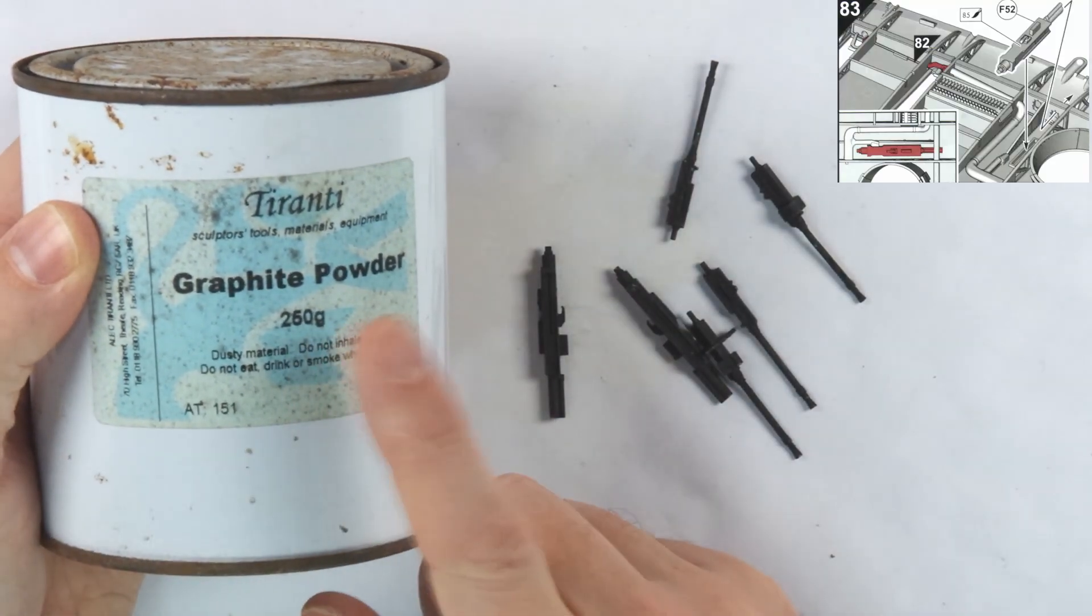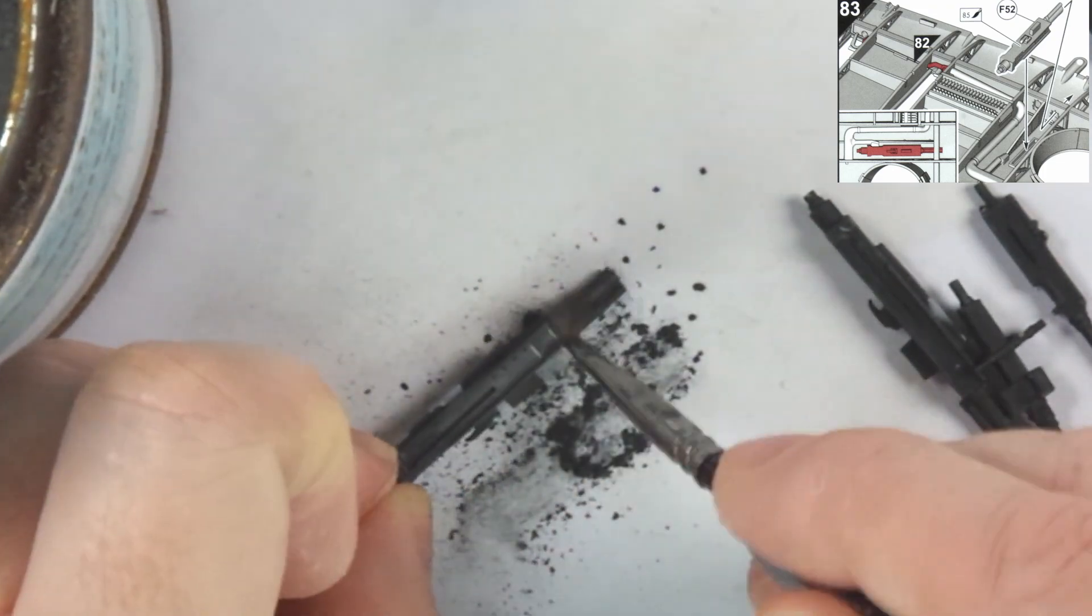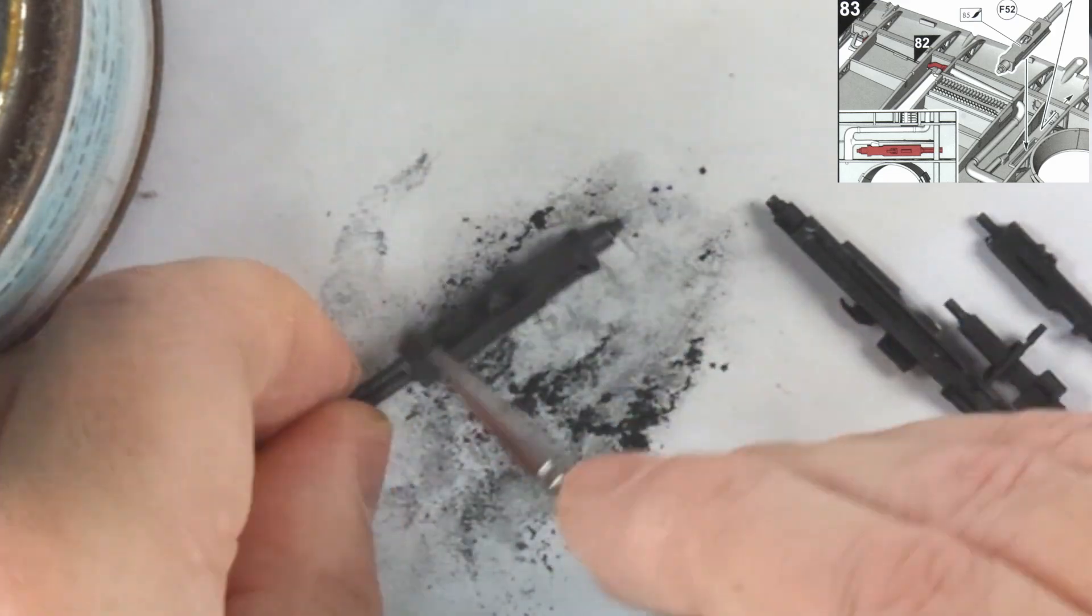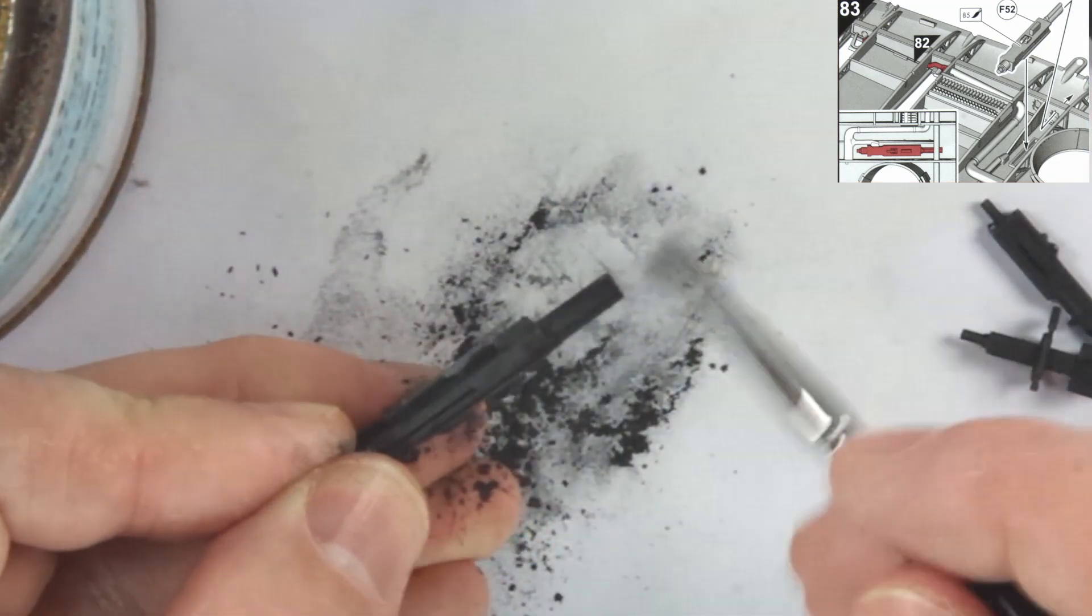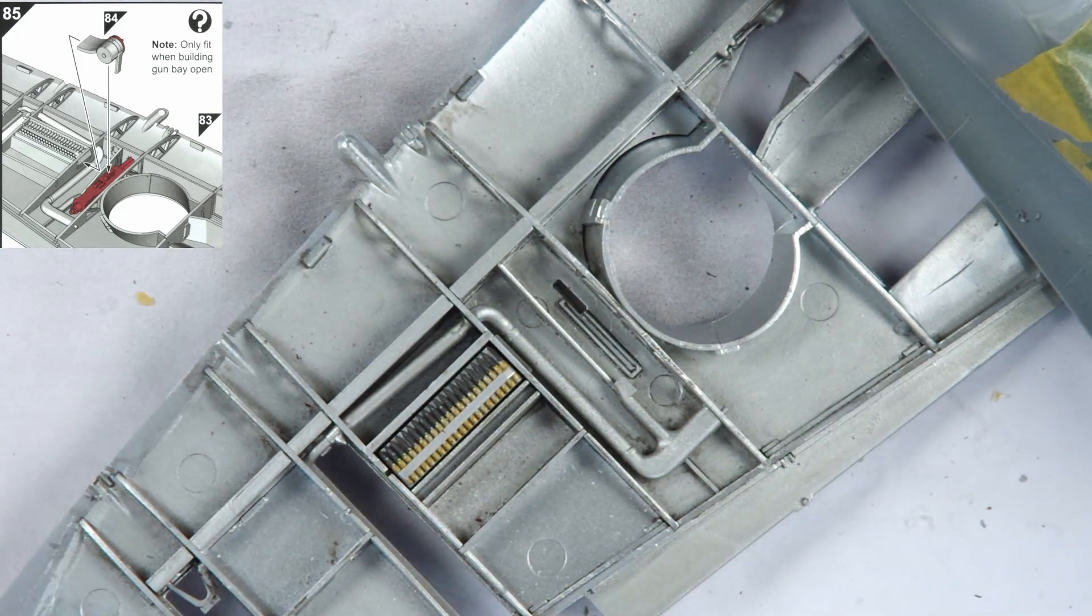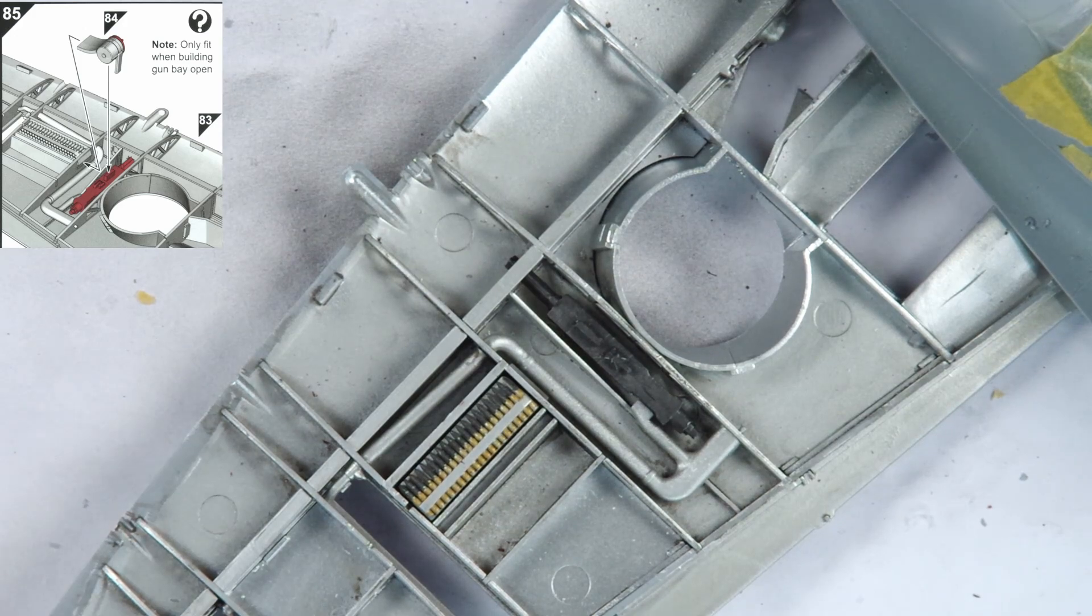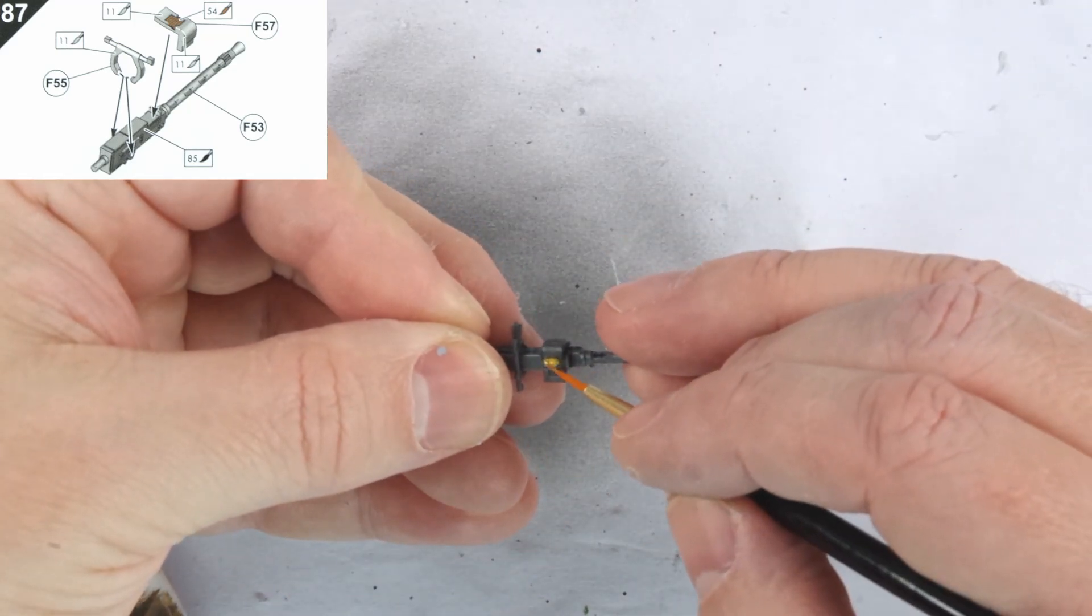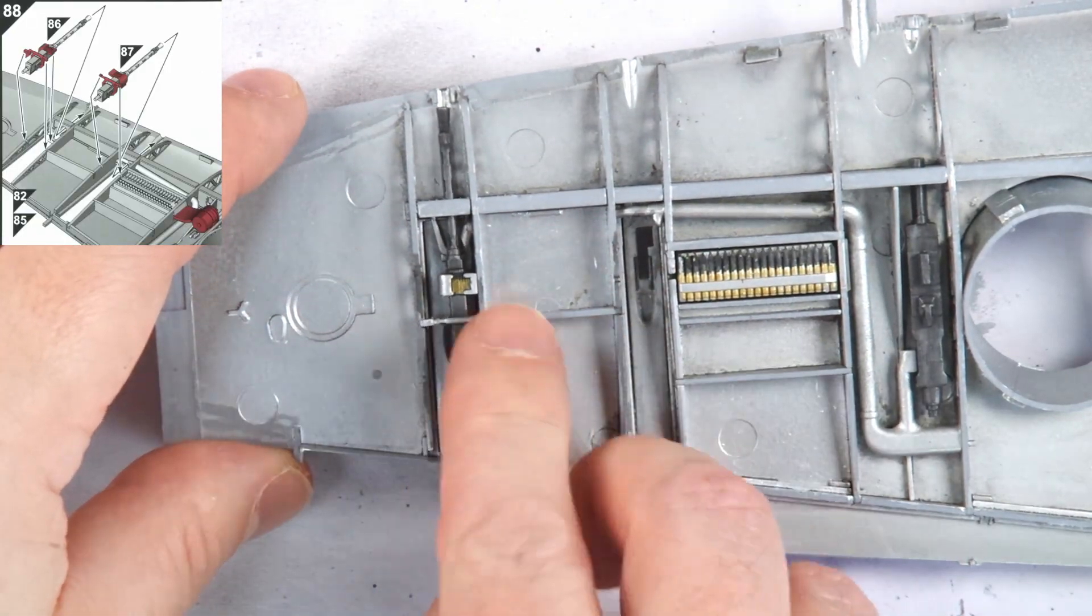Next up were the Browning Machine Guns and Hispano Cannons, which I had previously sprayed black. I used graphite powder applied to these painted surfaces and gave them a light polish with a brush to create a very realistic gunmetal effect. I cemented the Hispano cannon in place, but left off the clockwork belt feeds. These done, I painted the shells for the Brownings, followed by a wash and other detail pieces that needed it. The Brownings were then put into positions as indicated in steps 88 and 94.